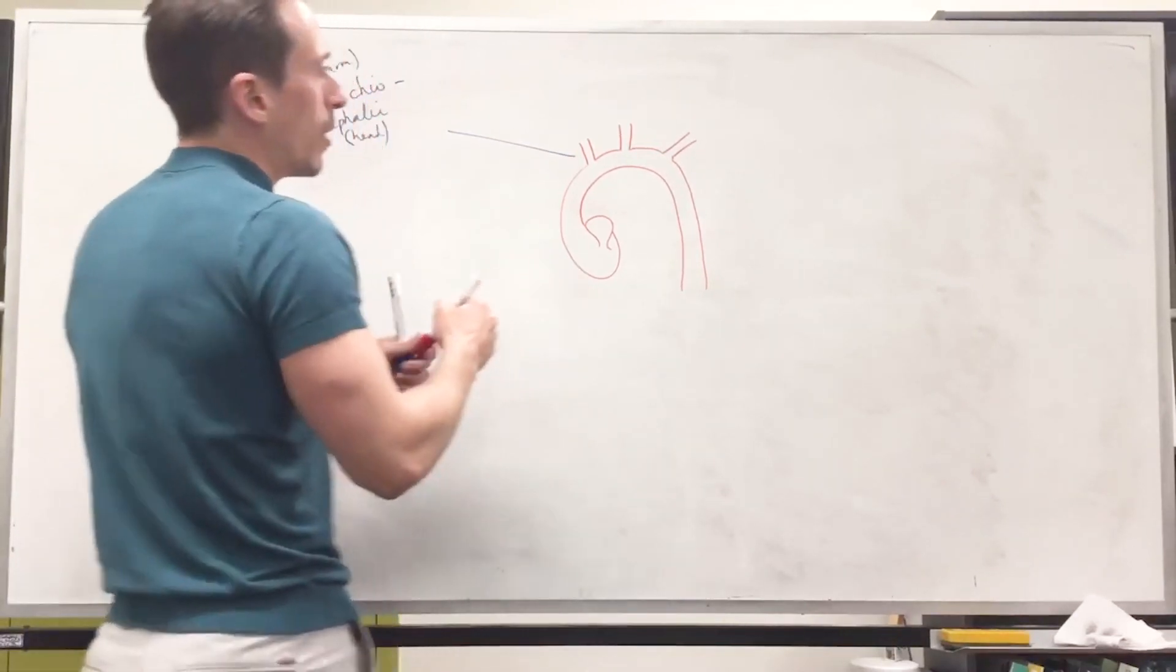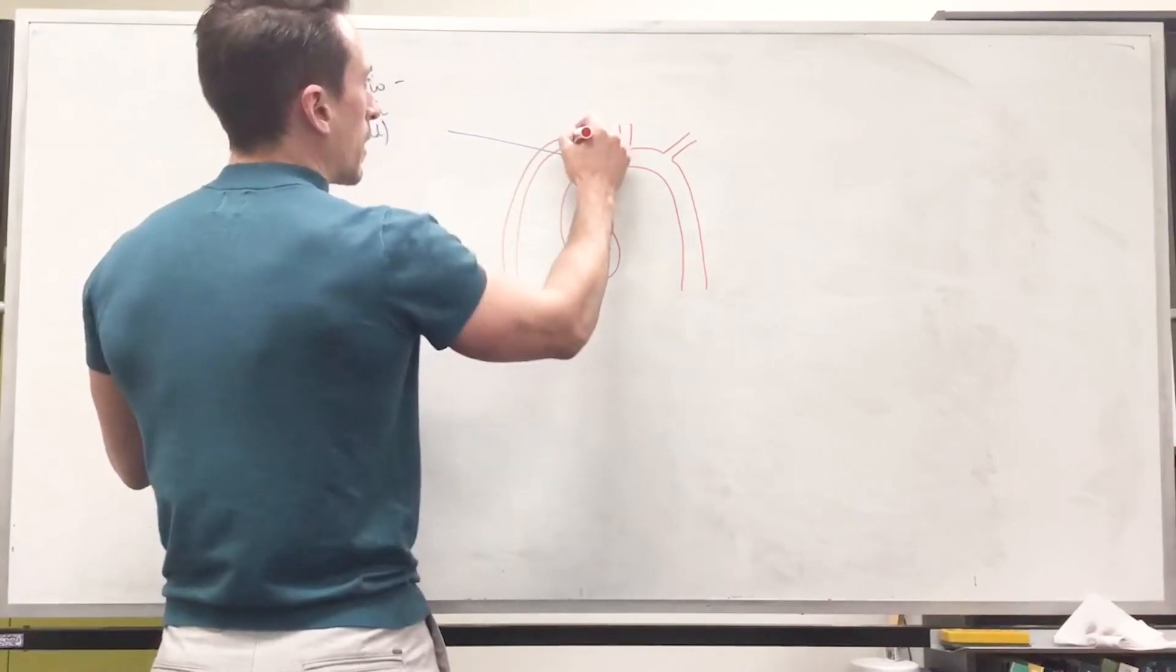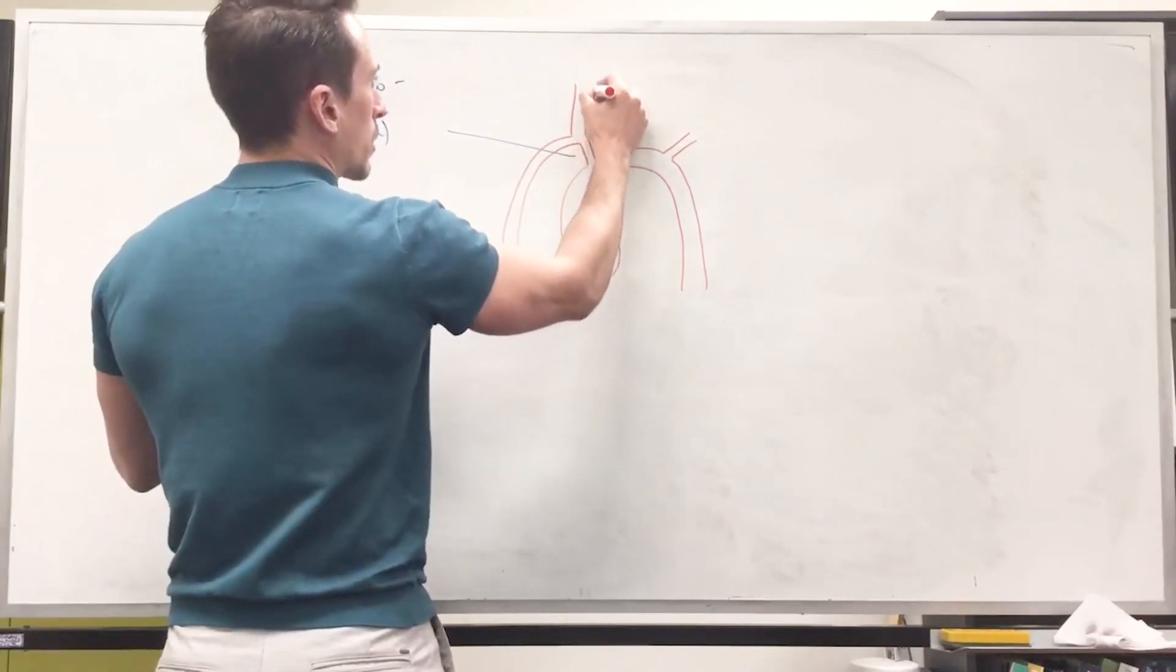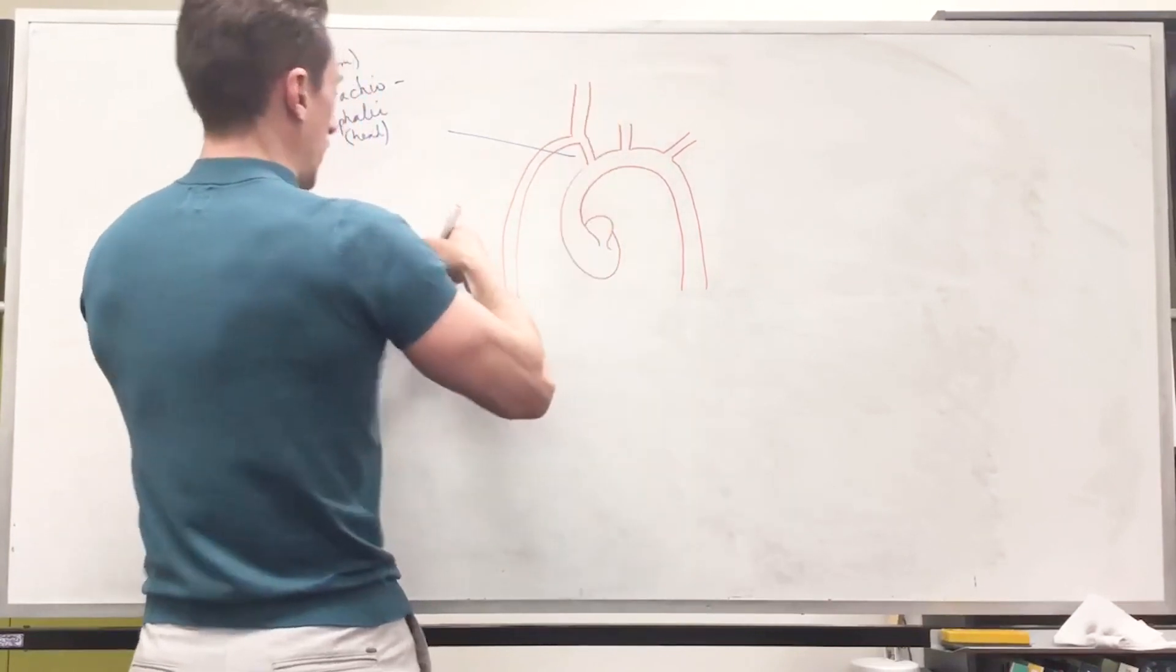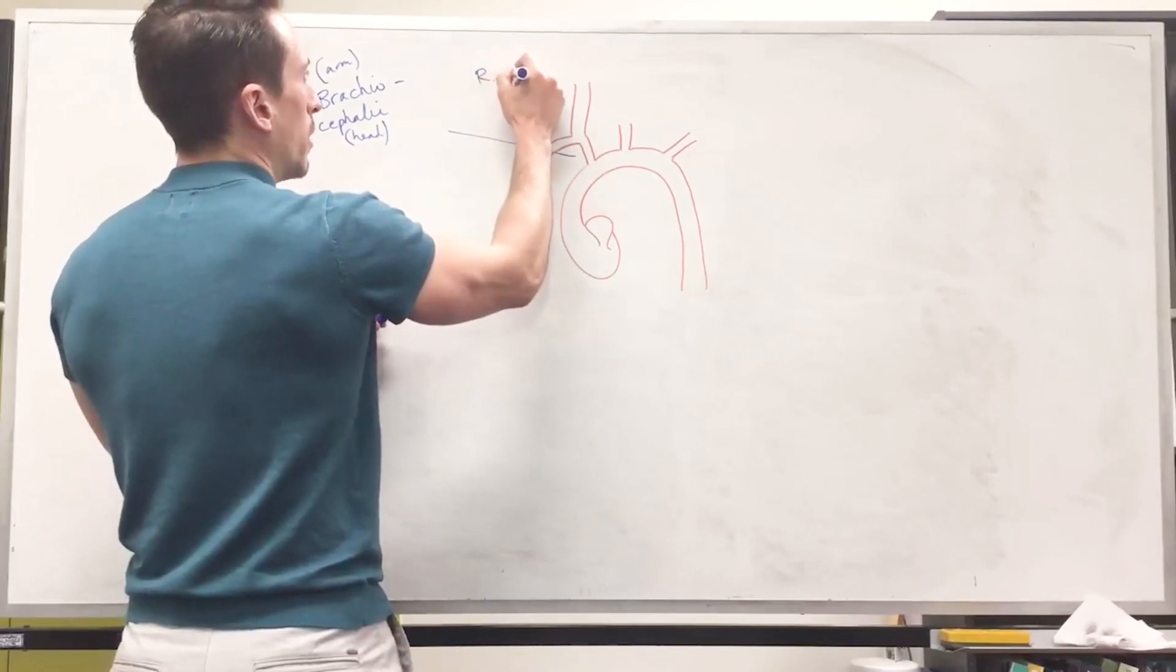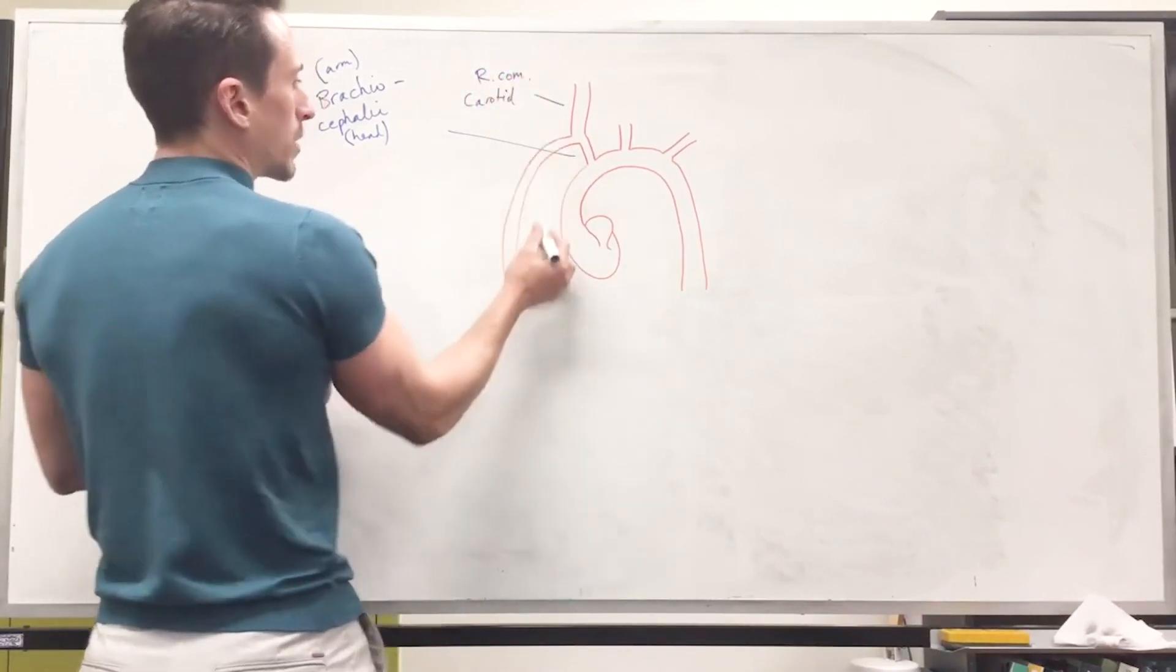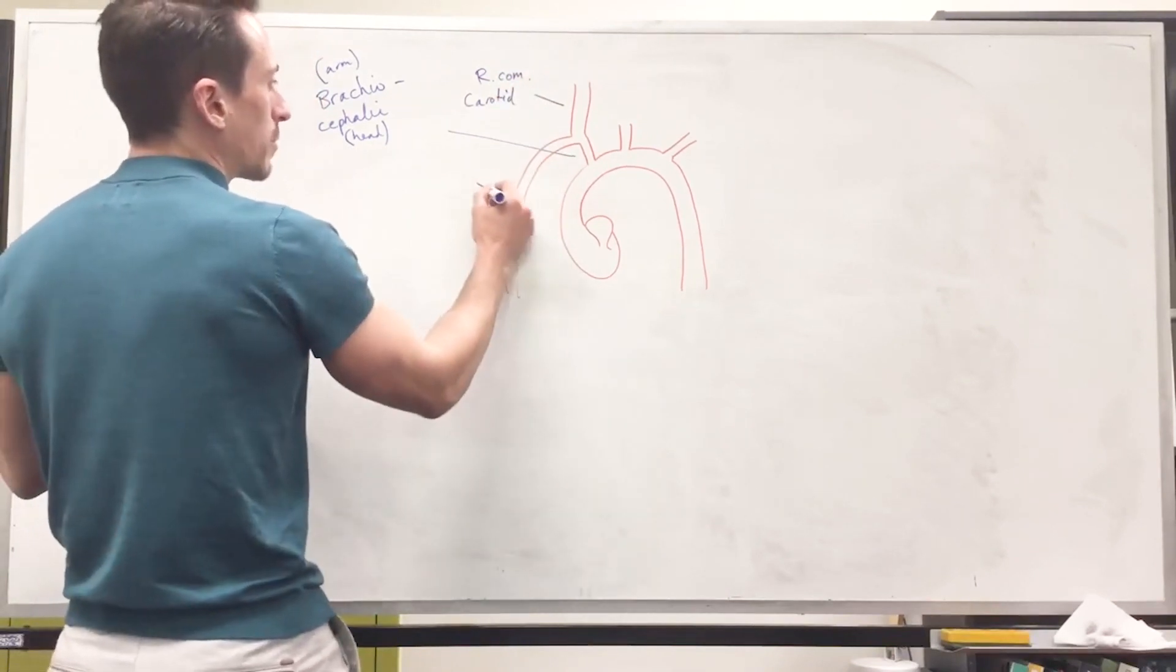How does it do it? Well, from this branch, you've got one that descends down this way, and one that goes up this way, that we term the common carotid. So let's label this one common carotid. In actual fact, it's going to be the right common carotid. What's this? Well, this is called the right subclavian.